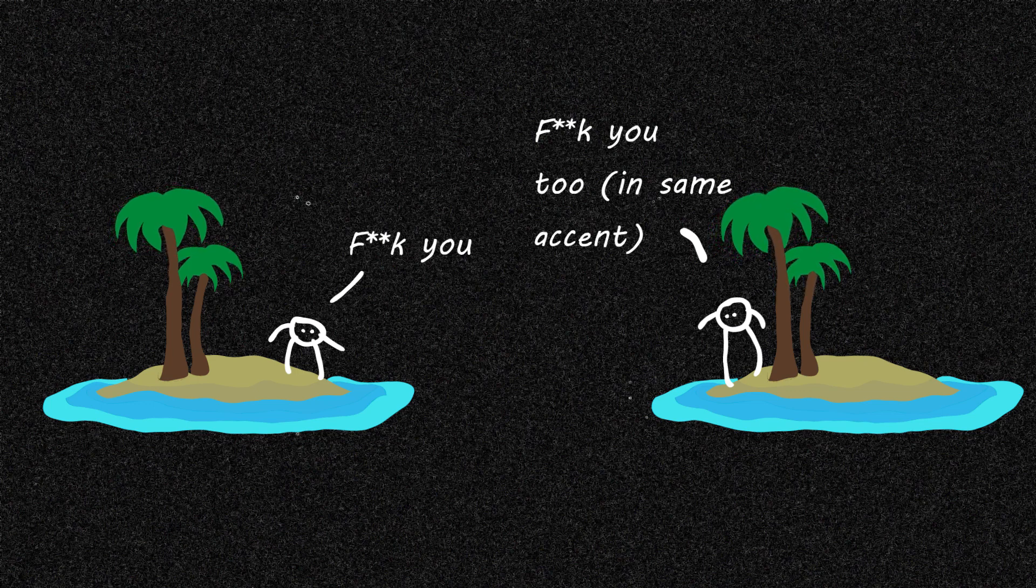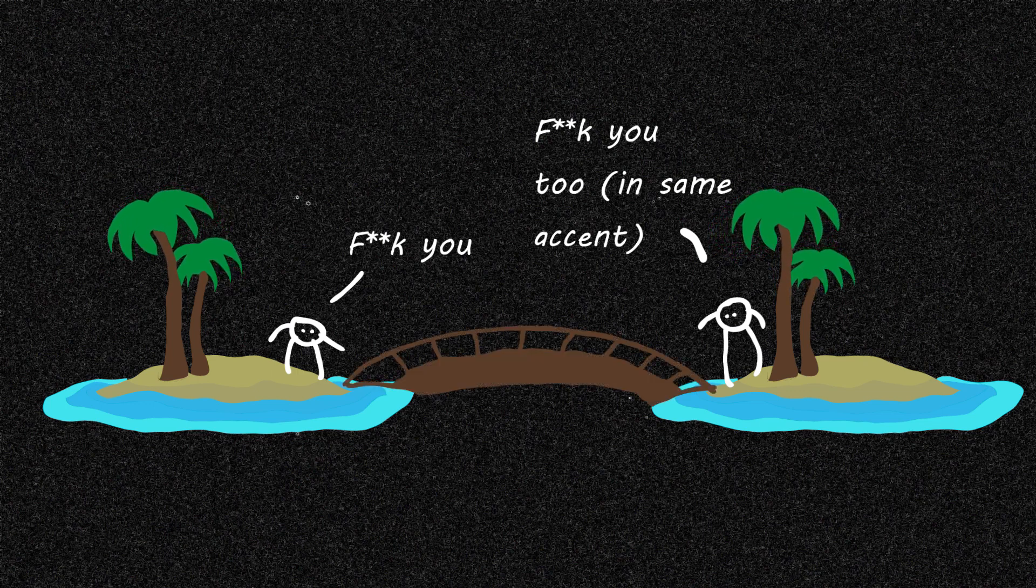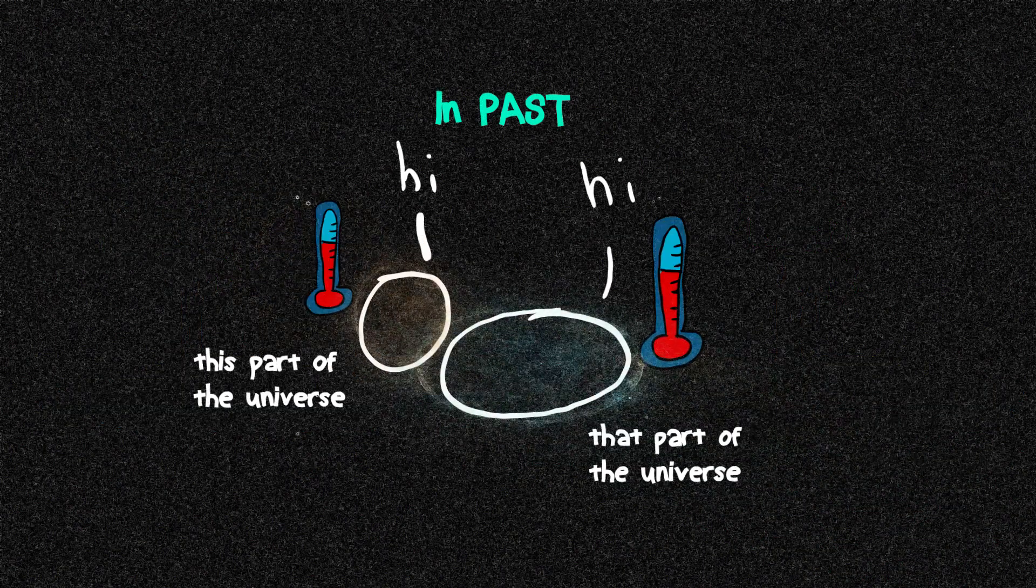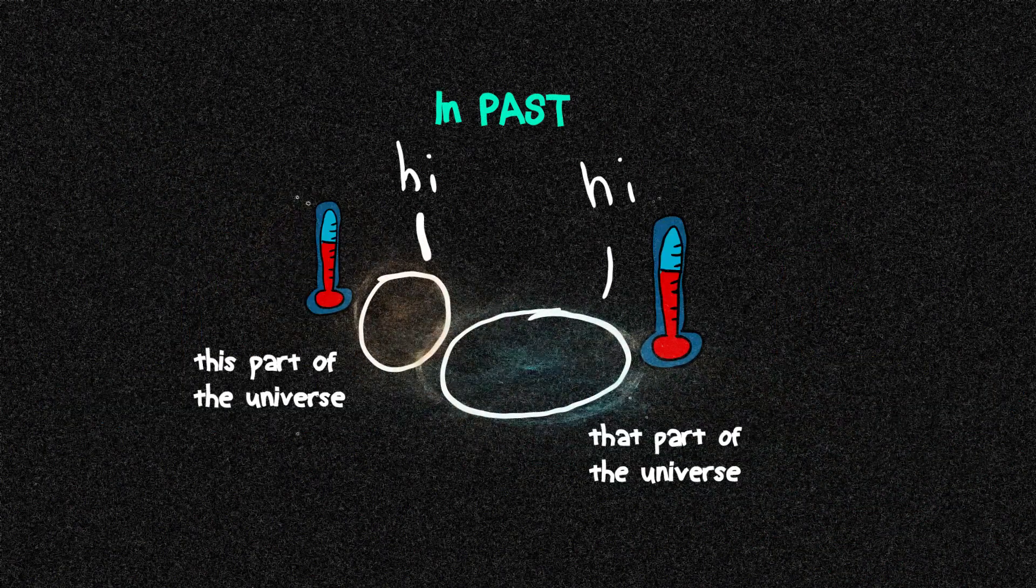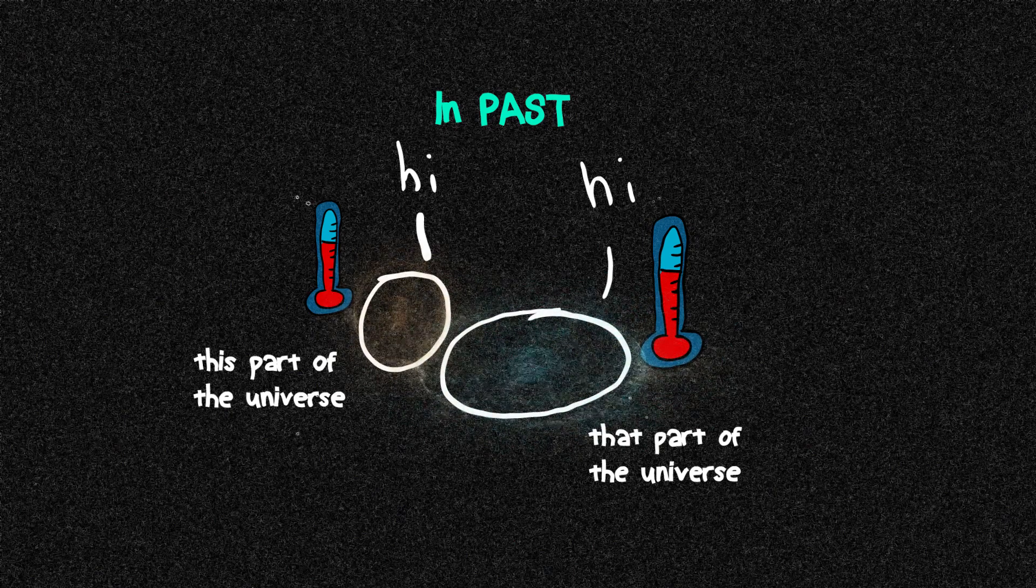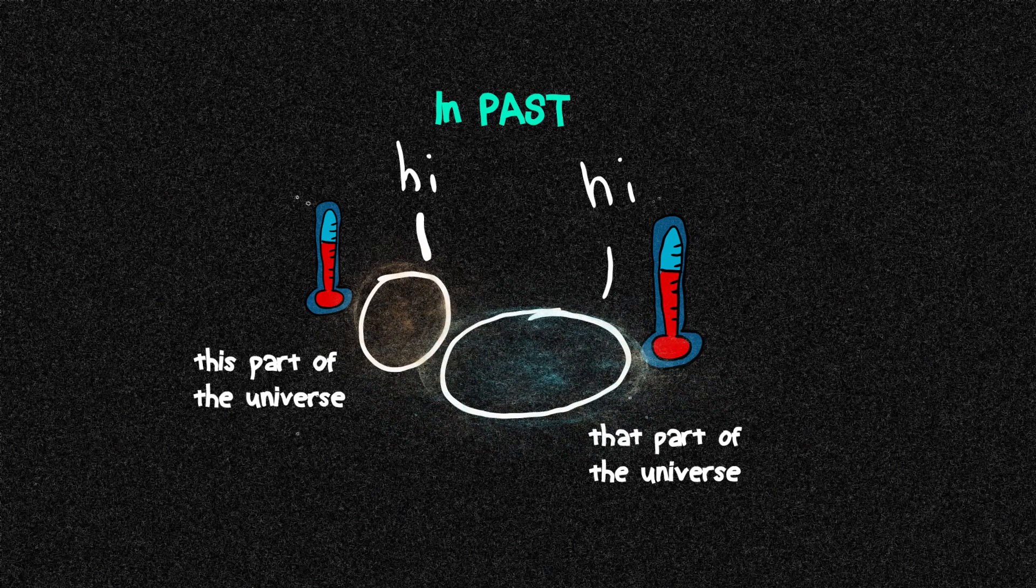That's how similar they are. Then you don't have to be a genius to come up with a theory that well, they must have talked to each other in the past. Which means that this part of the universe and that part of the universe had communication at some point. That way it can arrange itself to have exactly the same temperature as we see today.